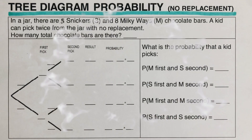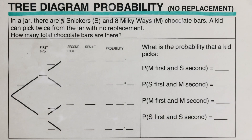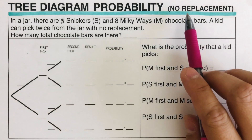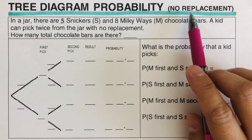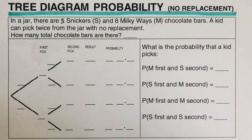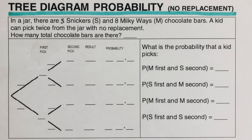Hello everyone! Today we're going to be talking about tree diagram probability with no replacement. Let's have a problem to better understand how tree diagram probability works. In a jar there are five Snickers and eight Milky Way chocolate bars.